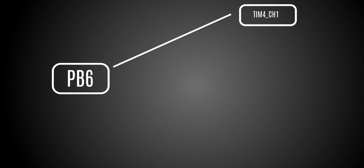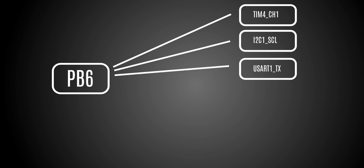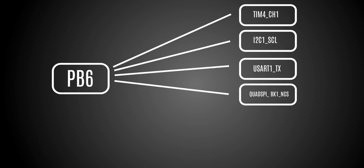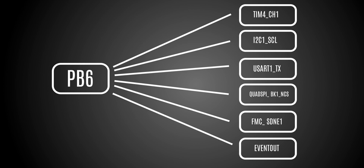On the other hand, if we take a look at PB6, it turns out that on the STM32 F722, PB6 can be used as timer 4 channel 1, I2C1 SCL, USART1 TX, QUAD SPI BK1 NCS, or FMC SDNE1. So you have a choice — either a timer, I2C, or serial port 1.